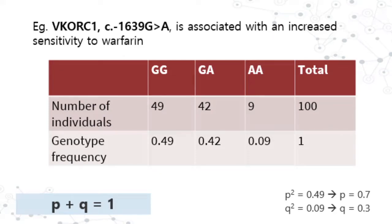Let's look at an example: a SNP in gene VKORC1, where a G base is substituted by A, and it is associated with increased sensitivity to warfarin. We have a population of 100 patients. After genotyping all of them, 49 patients have the GG genotype, 42 are heterozygous, and 9 are homozygous variant.